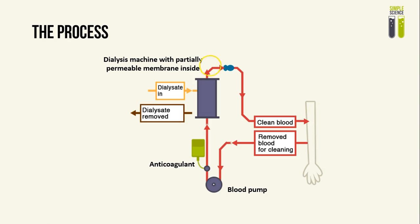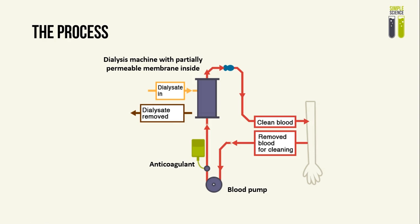The dialysate flows in and then flows out. It is replaced constantly to maintain a high concentration gradient. After the blood is cleaned by the dialysate in the dialysis machine, it then flows back to the patient's body as clean blood. It is also notable that there is an anticoagulant used in order to prevent blood clotting.